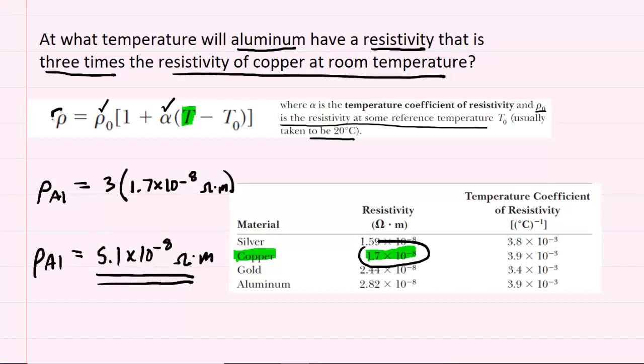As for the reference resistivity, that for aluminum is simply this value right here. So we know that the resistivity at the reference temperature for aluminum is 2.82 times 10 to the negative 8th. And again, that's in ohm meters.